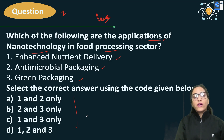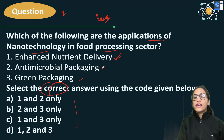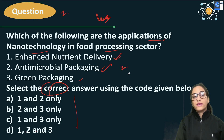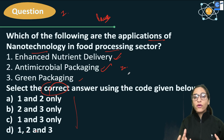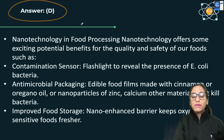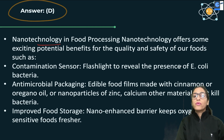I hope you have paused. Now, what is the answer? All three of them are right — D: one, two, three. The correct answer includes nutrient delivery enhancement, antimicrobial packaging, and green packaging. Nanotechnology in food processing gives you a lot of benefits.